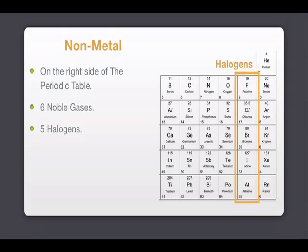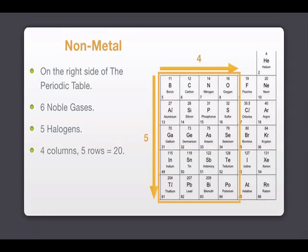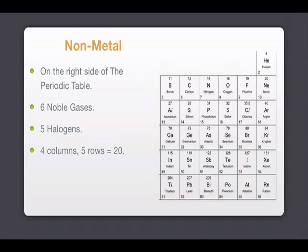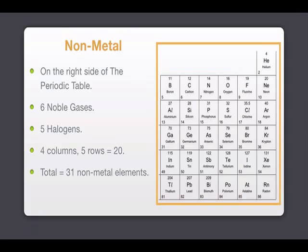For the rest of the 20 elements, they are being arranged in 4 columns and 5 rows. In total, there are 31 non-metal elements.